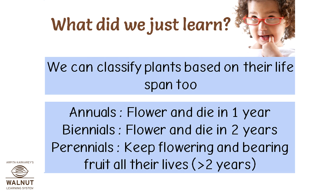We can classify plants based on their lifespan too. Annuals flower and die in one year. Biennials flower and die in two years. Perennials keep flowering and bearing fruit all their lives — more than two years.